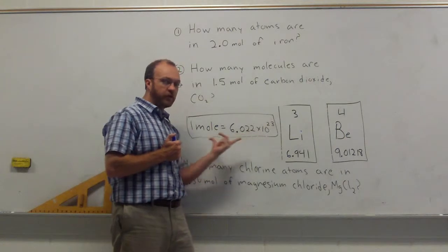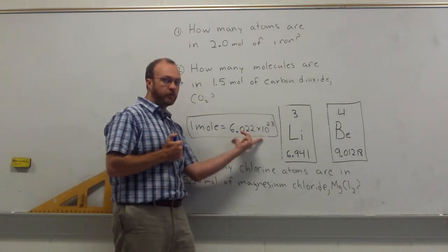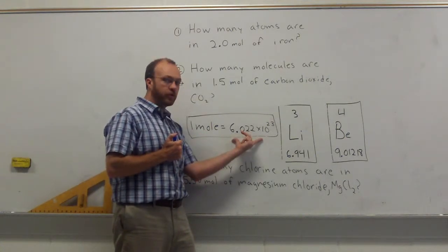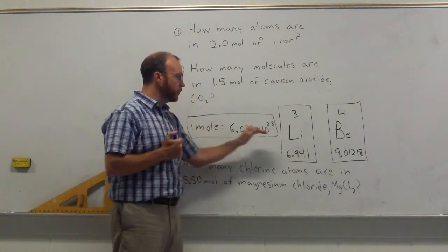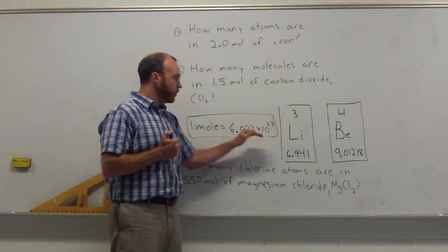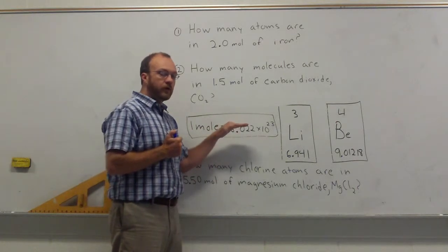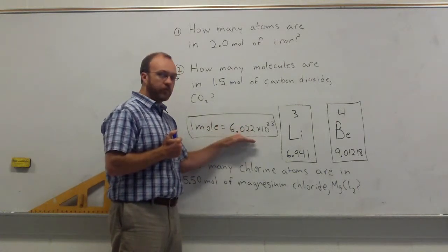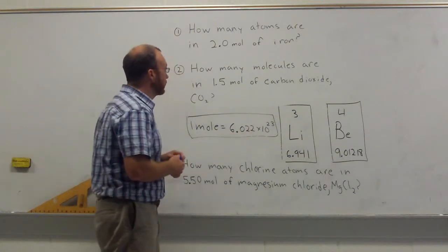To four significant figures, one mole is 6.022 times 10 to the 23rd. So we can also, instead of going from moles to grams, go from moles to particles. Now that may be atoms, it may be molecules, or it may be formula units.